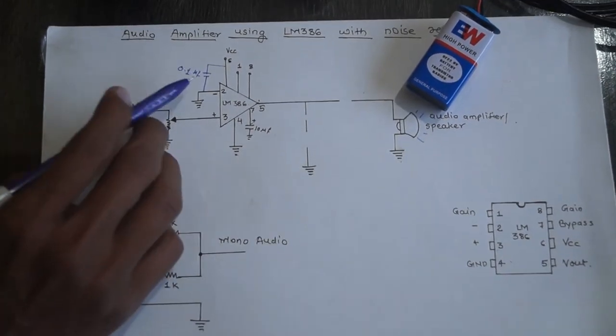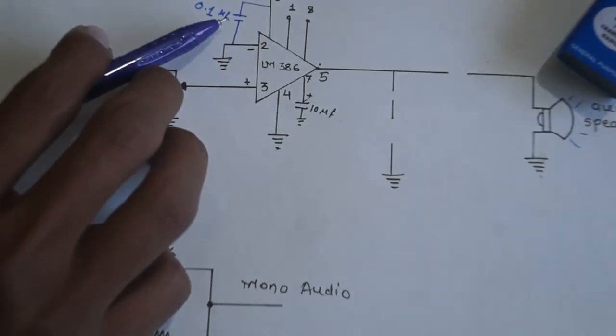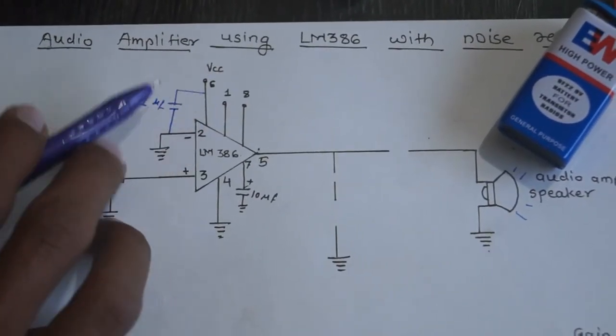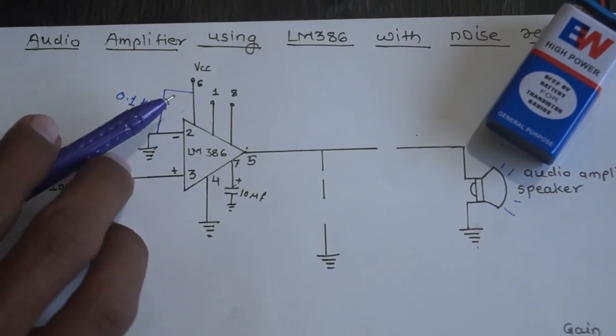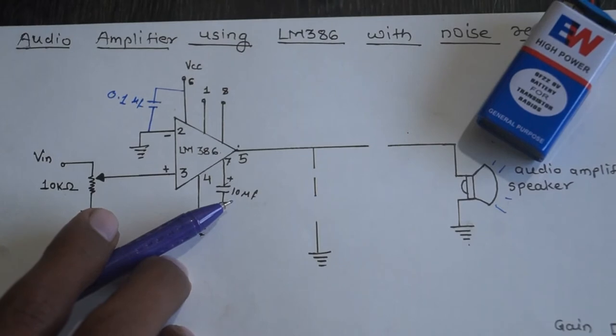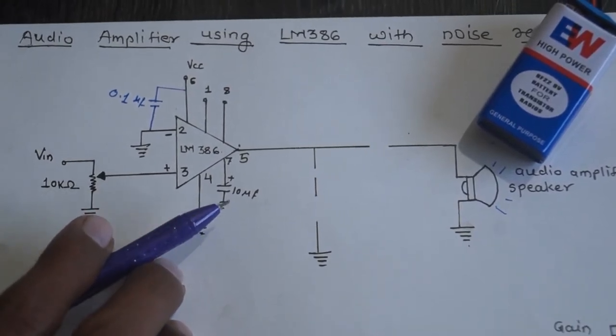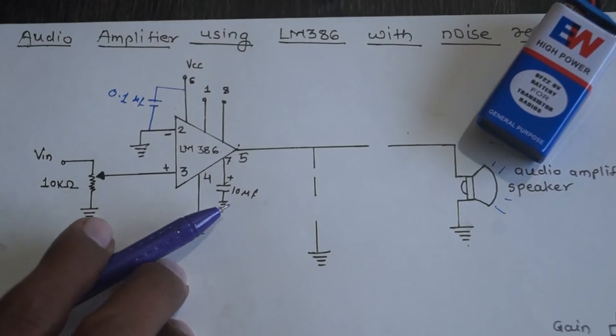I recommend a 0.1 microfarad disc-type capacitor parallel with the power supply for removing noise and protecting the IC from instant power surges. This 10 microfarad capacitor is also used for filtering, and 10 to 100 microfarad capacitors work well.